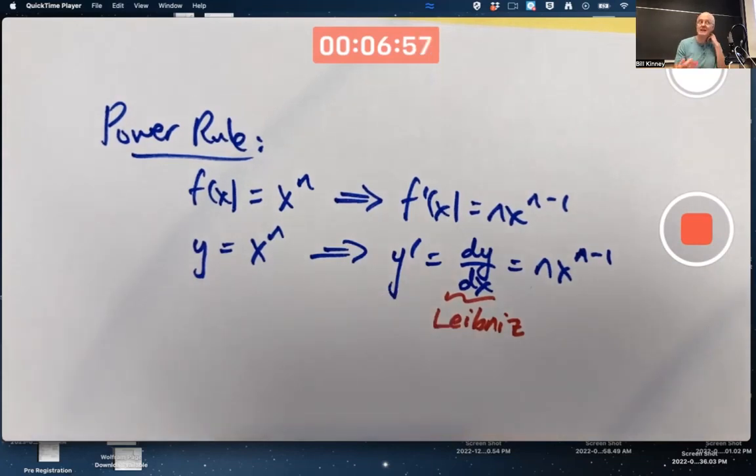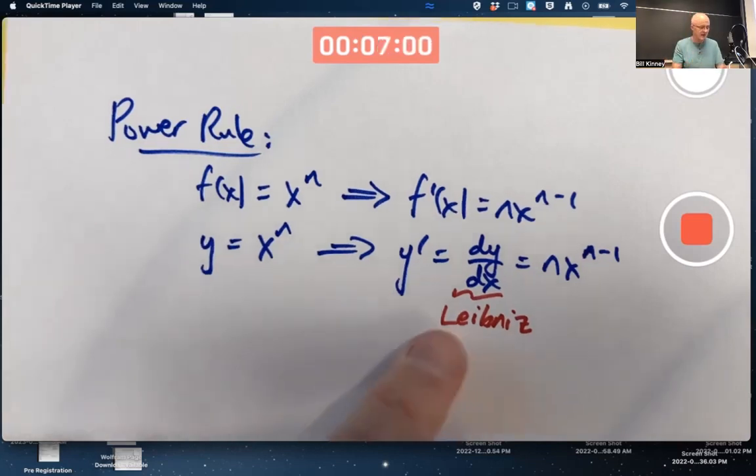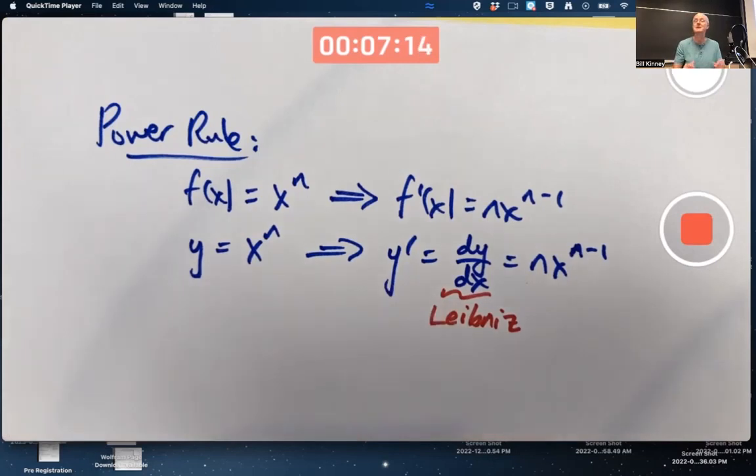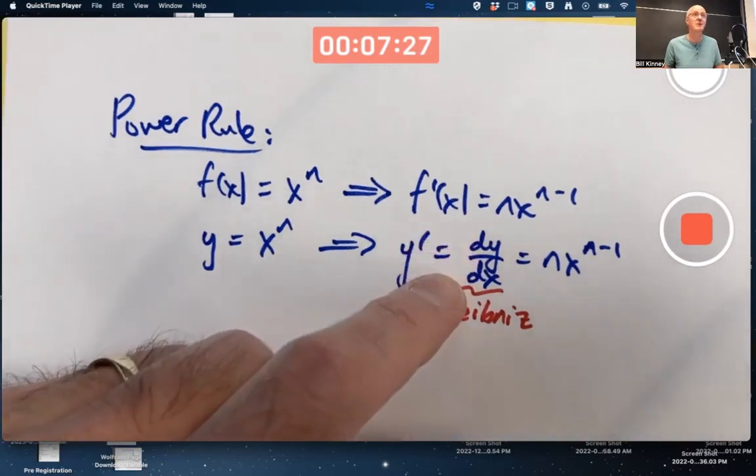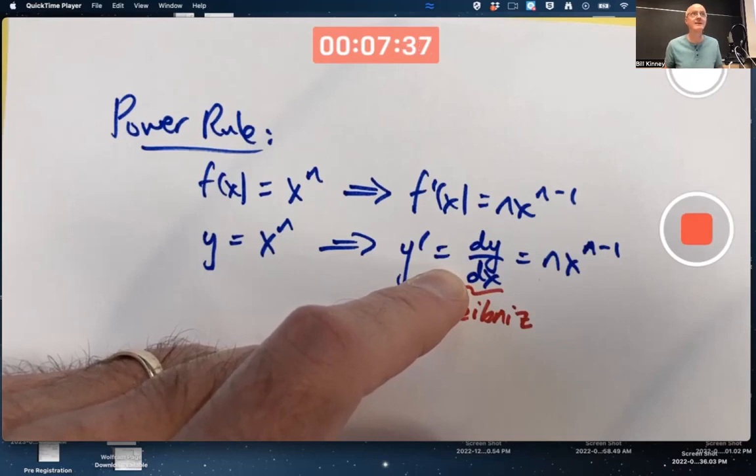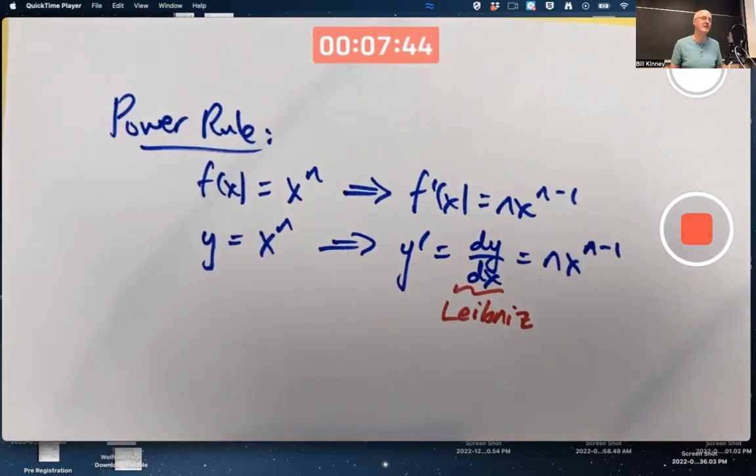Leibniz was one of the co-inventors of calculus with Newton, and he used this notation, dy/dx for the derivative. Why did he use it? That's something we're going to get into next week. Looks like a fraction, doesn't it? It's not really a fraction, but you could think of it as a limit of fractions, and it doesn't hurt to pretend that it's a fraction sometimes. Calculus is full of what I call convenient fictions, and this is one of them.